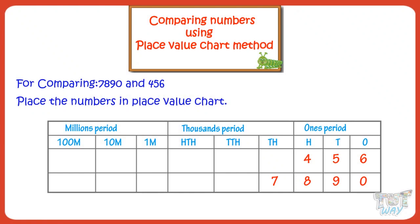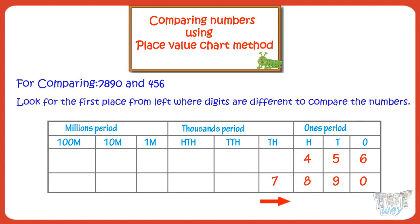Now, in the place value chart, you start at the left and look for the first place where the digits are different to compare the numbers. If we start at left, there is no digit in 456 at the thousands place, and there is 7 at thousands place in 7890. So we have a bigger number first in 7890 if we start comparing digits from left. So this number is bigger.